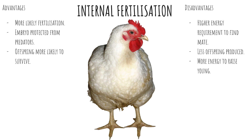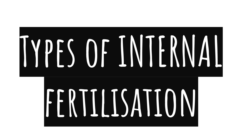Internal fertilization occurs most often in land-based animals, although some aquatic animals also use this method. There are three ways that offspring are produced following internal fertilization: Oviparity, Ovoviparity, and Viviparity.